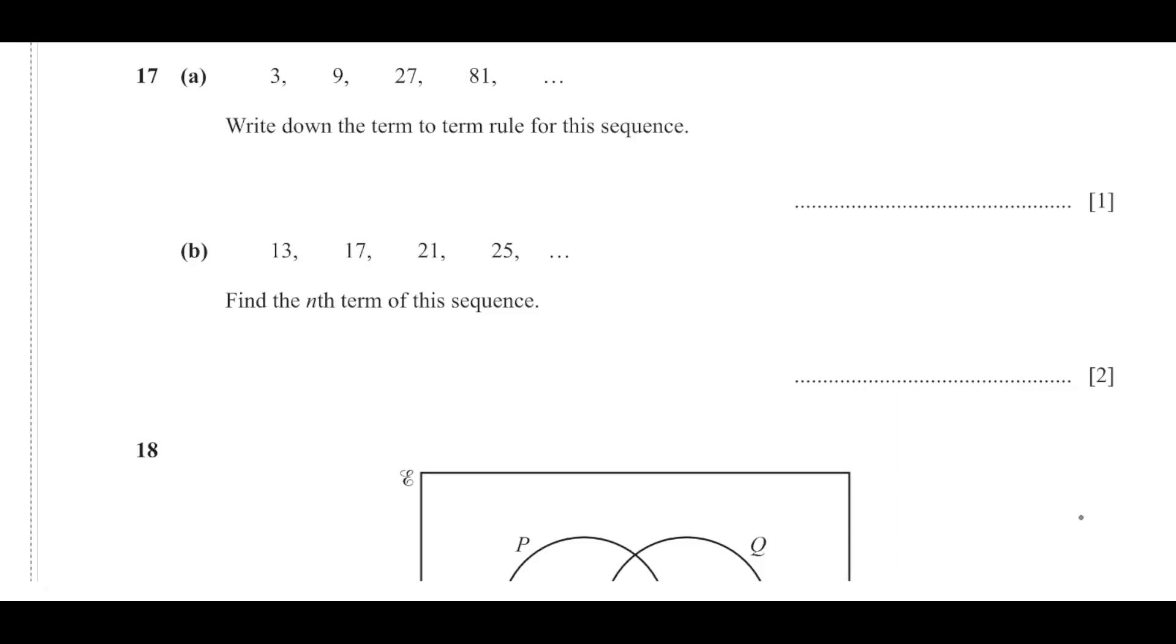Now question number 17, part (a): Write down the term-to-term rule for this sequence: 3, 9, 27, 81. You can easily work out that the term-to-term rule is multiplying by 3 - the next number is multiplied by 3.